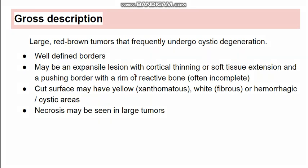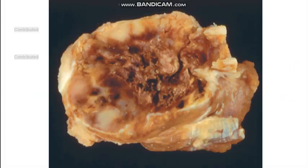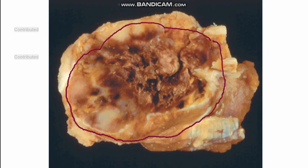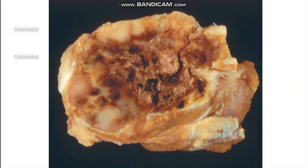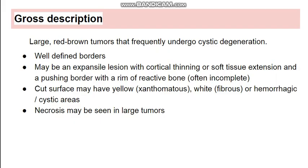Grossly, this tumor is a large red-brown tumor. As seen in the picture, it is mostly well-delineated, which is expected of a benign tumor. The inside shows a red-brown color. Secondary changes such as cystic change, necrosis, and hemorrhage can be seen. It is a large red-brown tumor with well-defined borders and can undergo cystic degeneration.